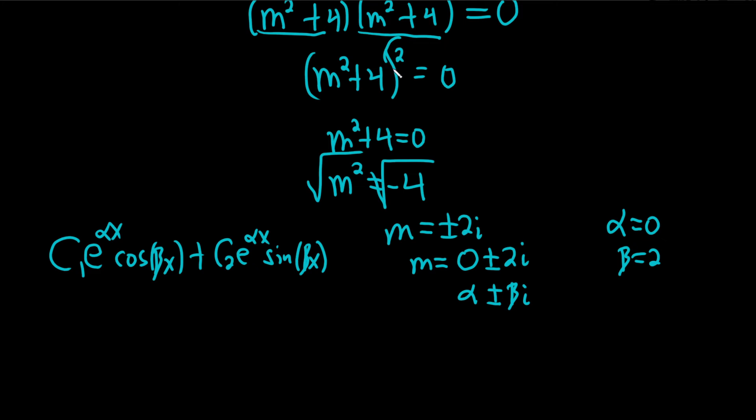Now, this is multiplicity 2. So that's the key here. And you know that because the m squared plus 4 term appears twice. So what's going to happen here is we're going to use this formula, and then we're going to use it again, and we're going to multiply it by x because we have multiplicity 2.